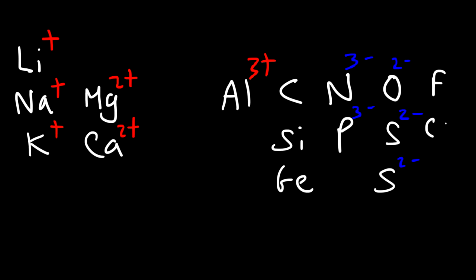Finally, you have the halogens, like fluoride, chloride, bromide, and iodide. These halogens form anions with negative 1 charges.